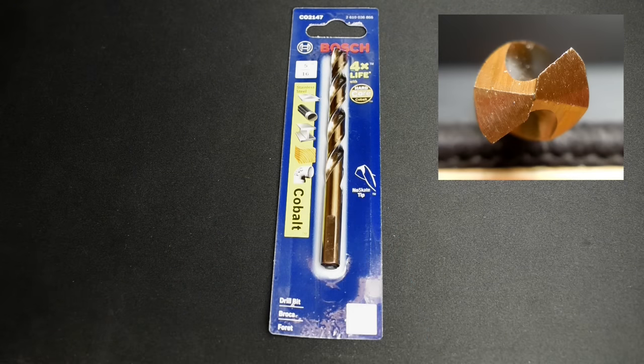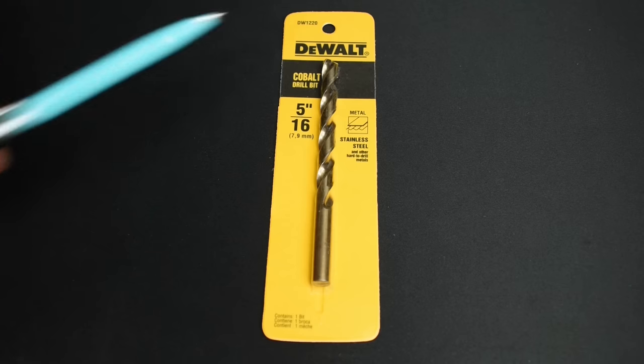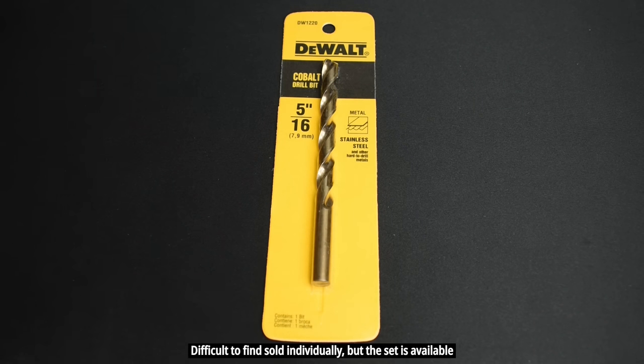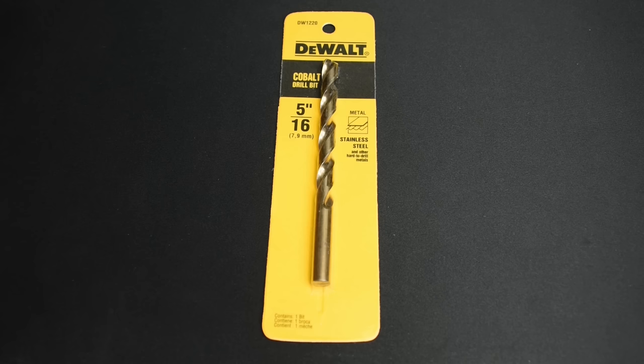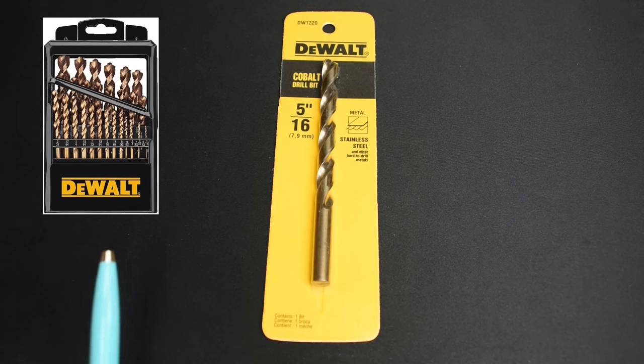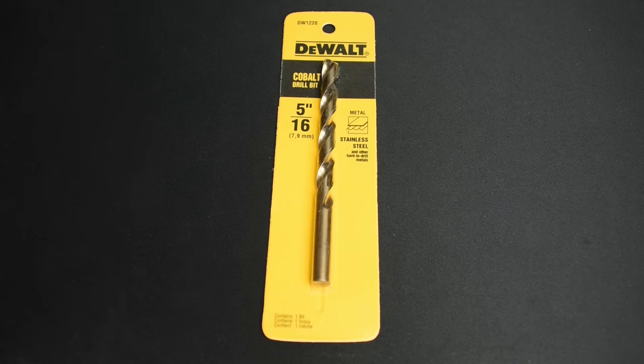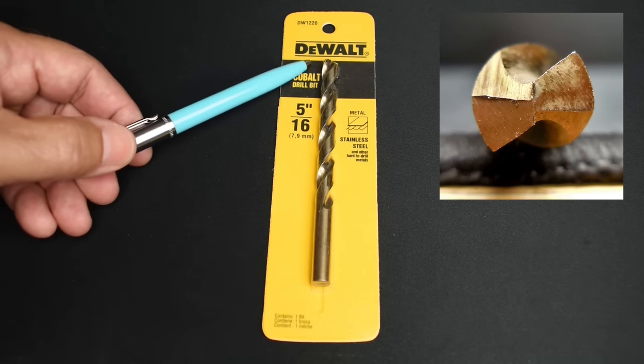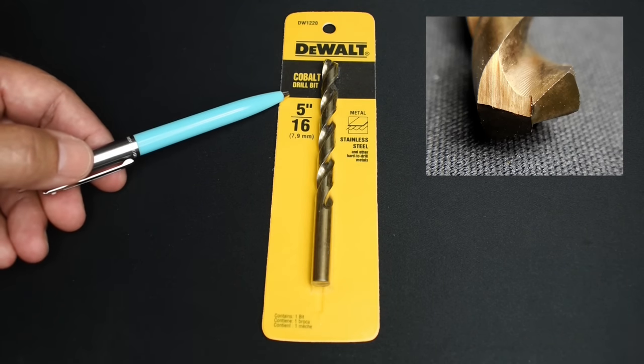The last cobalt bit is DeWalt. It's a DW1220. The DW1220 is typically sold as part of a set, it's a DD4069, you can see that over here on the right. It's going to be a very good comparison for the Drill America and the other set that's sold by DeWalt right over here is a DWA1269 and that one has a pilot point. The purpose of the pilot point is to prevent walking and have the bit cut faster when contact is made. The tip of the DeWalt bit uses a 135 degree split point. Average retail price for this cobalt bit is very close to the Milwaukee, right around ten dollars. The DeWalt cobalt bit is made in China.